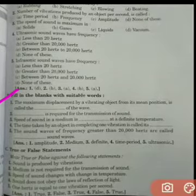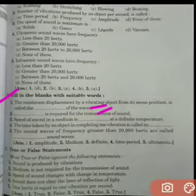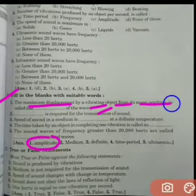Talking about the very first question: the maximum displacement by a vibrating object from its mean position is called dash of the wave. So amplitude is the maximum displacement by a vibrating object from its mean position.